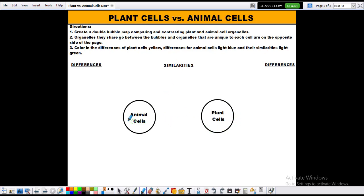So if we take a look at this map here, this double bubble map is going to show us the similarities and differences between plant cells and animal cells.